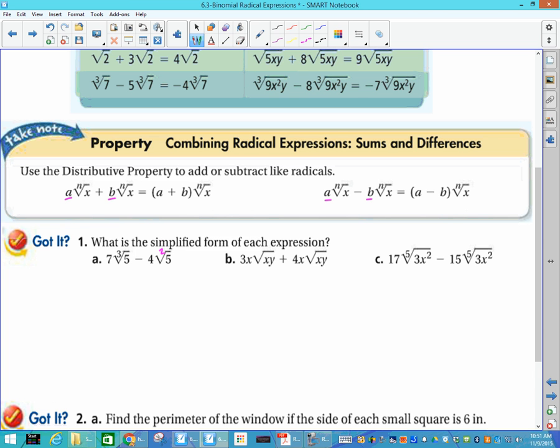So I have 7 cube roots of 5 minus 4 square roots of 5. So this is actually a 2, and so that itself cannot be simplified. So in the answer blank on a quiz or a test, you're actually going to write the same thing, because there's nothing that you can do to simplify it. But you don't want to leave it blank, you need to put the same thing in there, because it can't be simplified.